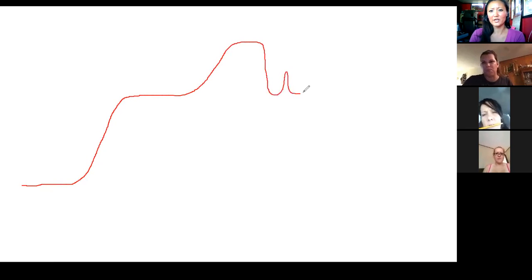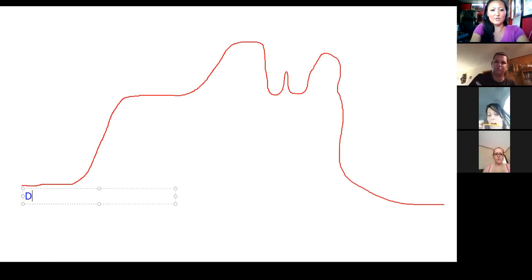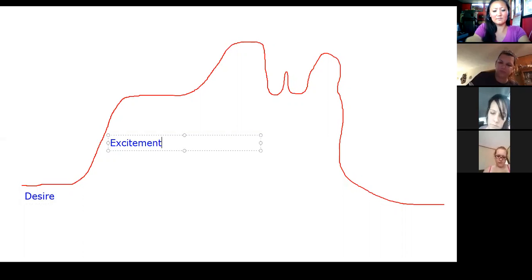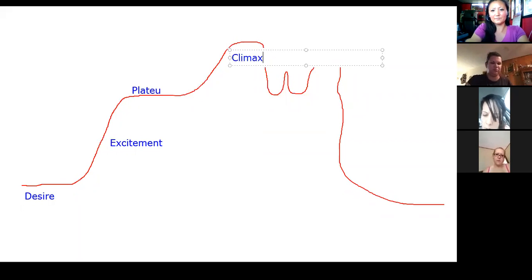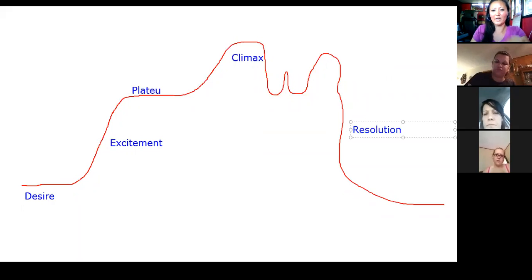Currently with everything being updated, they say there's only four, but I believe that there is still five. So these six phases are: the first one is your desire, your second one is your excitement, your third one is your plateau, then up here you have your climax, and then this is where your multiple orgasms come into play, and then you have your resolution.